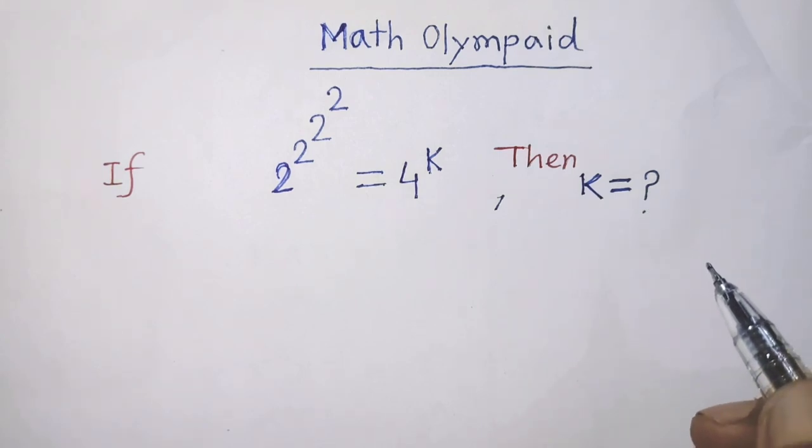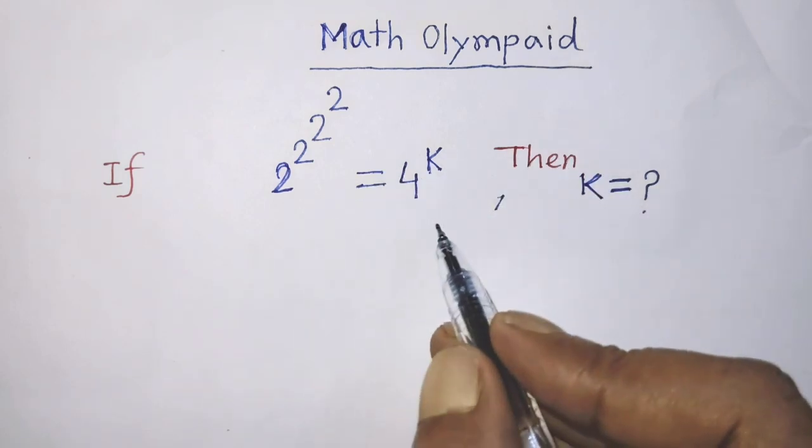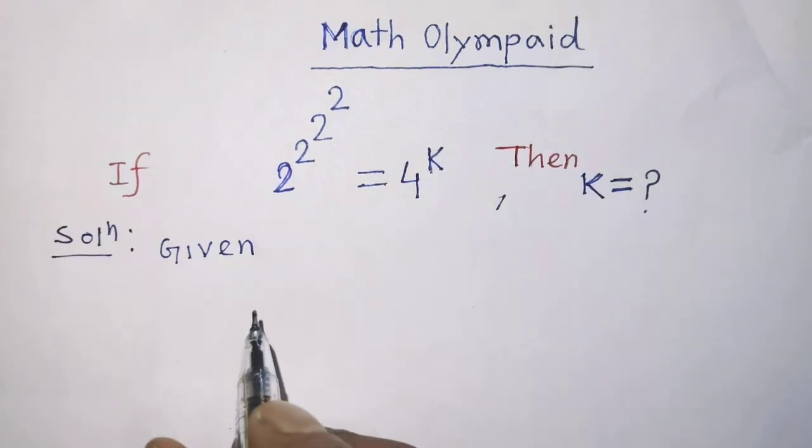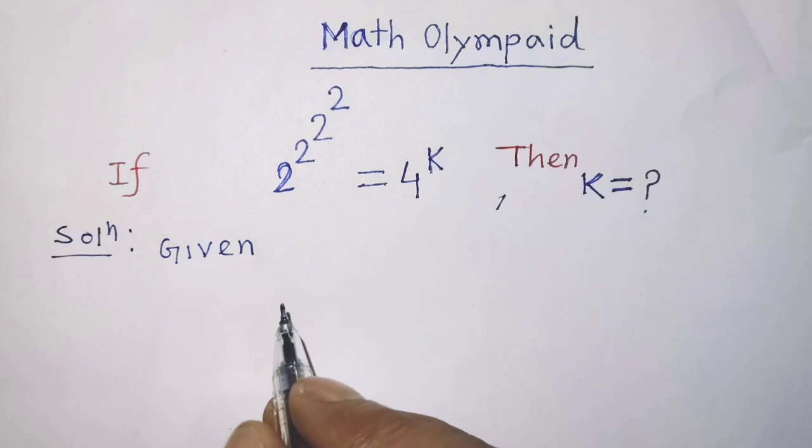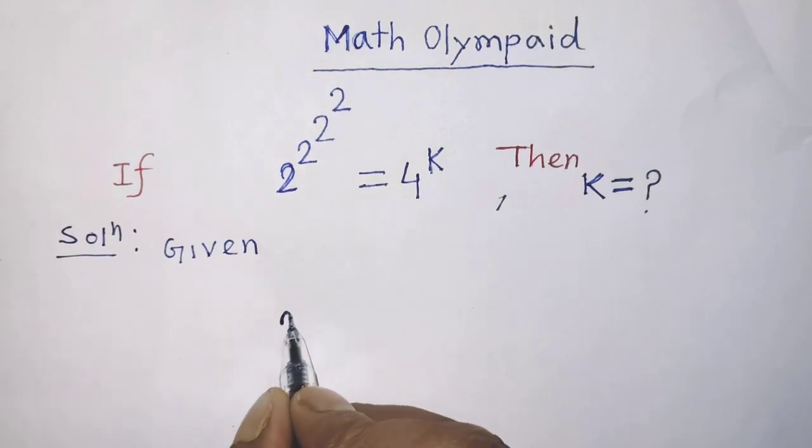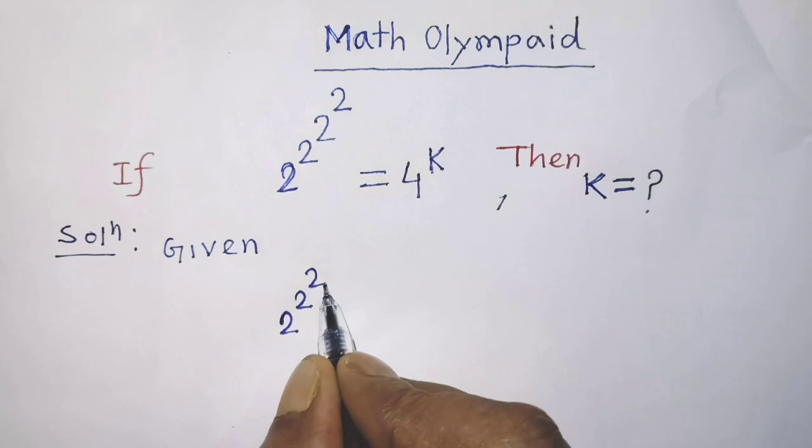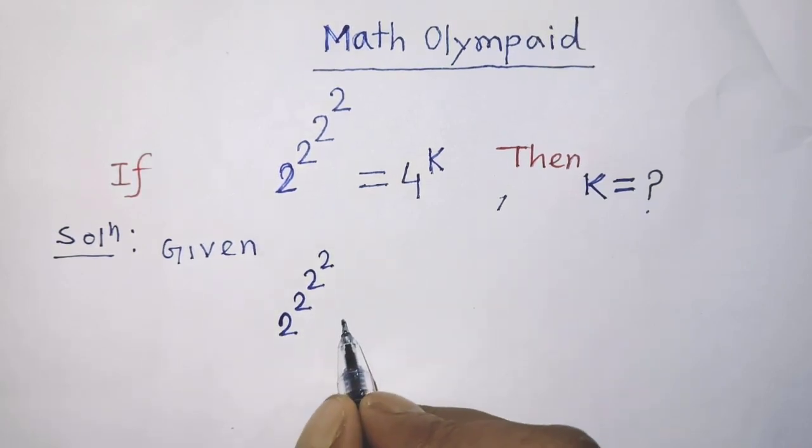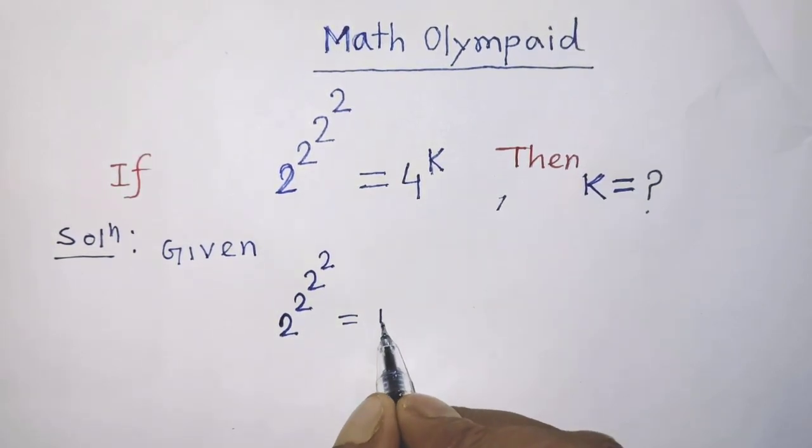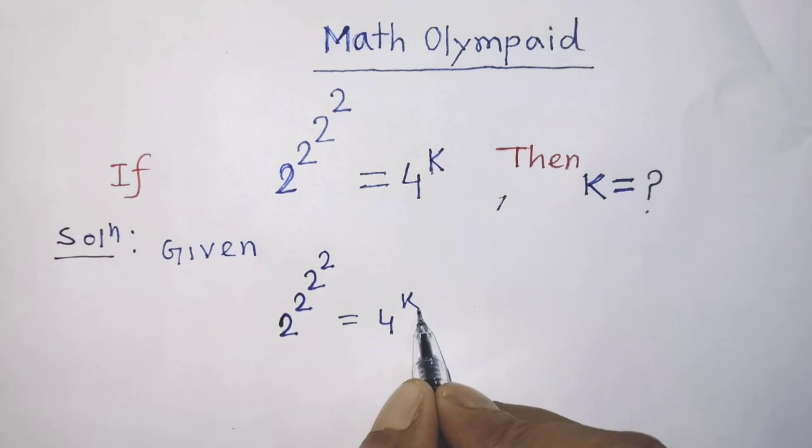Today I am telling you how to find the value of k from this equation. Our given equation is 2 power 2 power 2 power 2 is equal to 4 to the power k.